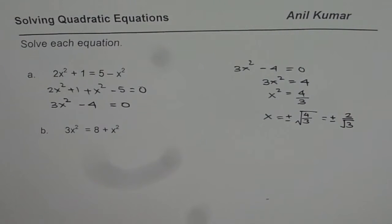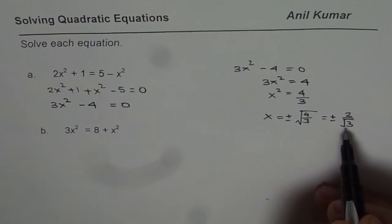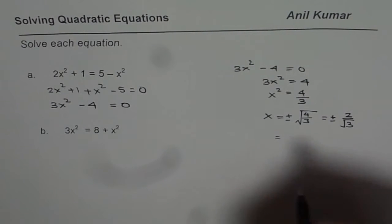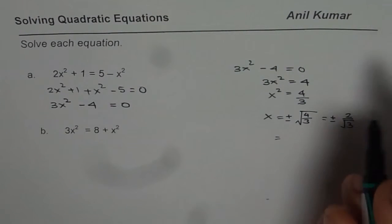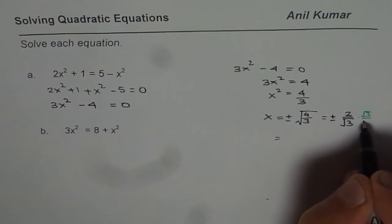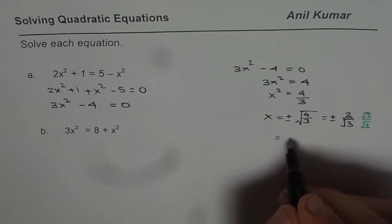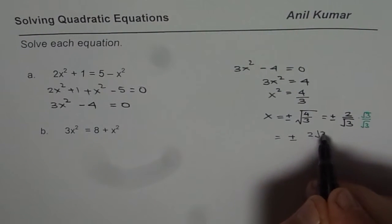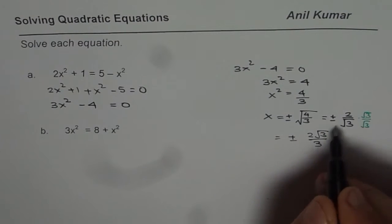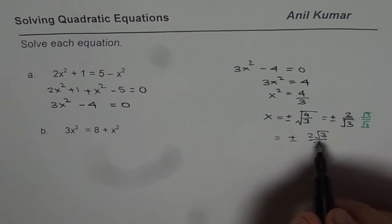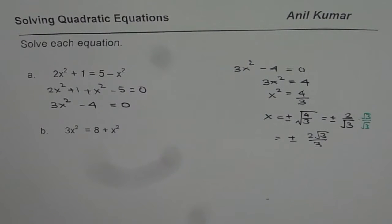Now, that is one way of writing this solution. At times, for some of the students who have learned rationalization, we may have to rationalize and then write down the answer. That means you have to multiply and divide by square root of 3 because we do not like to write square root of 3 in the denominator. That is kind of an understood rule. In that case, we get a solution as 2 square root of 3 over 3. So, this is only for those students who have learned rationalization. So, that is how you could solve quadratic equations.